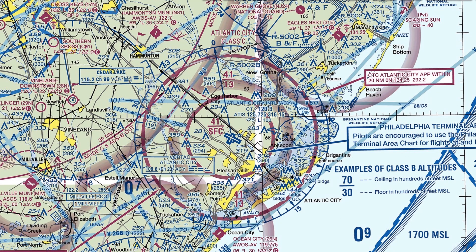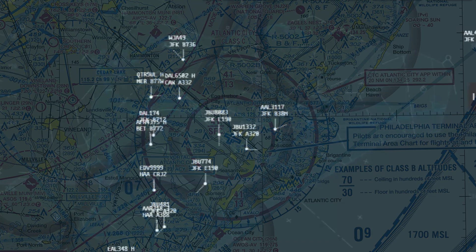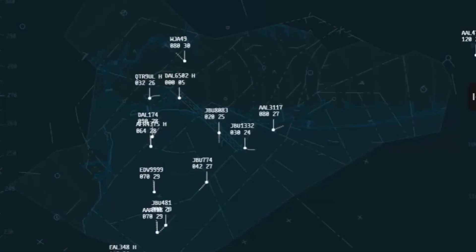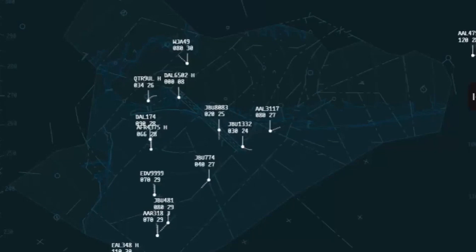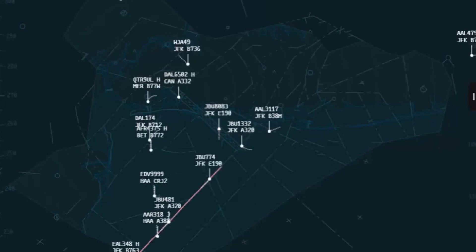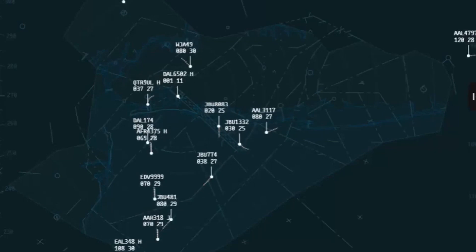In addition to transponders, aircraft also must have ADS-B-out equipment on board, which uses GPS information to transmit position information to the ground.